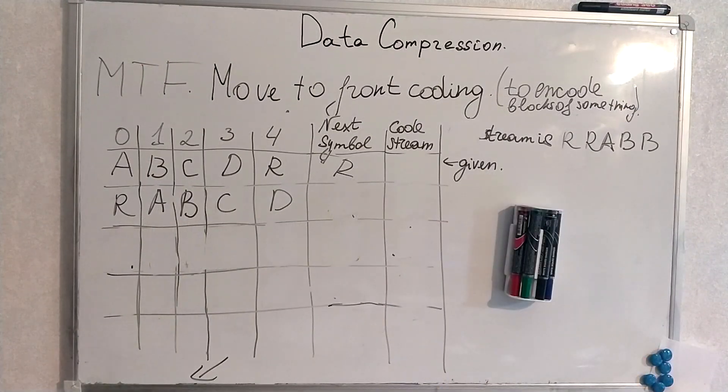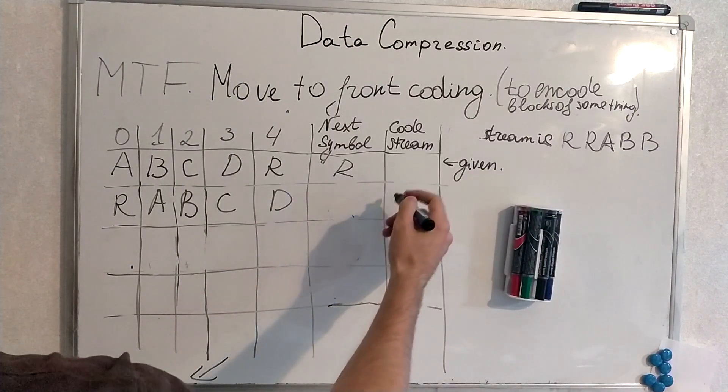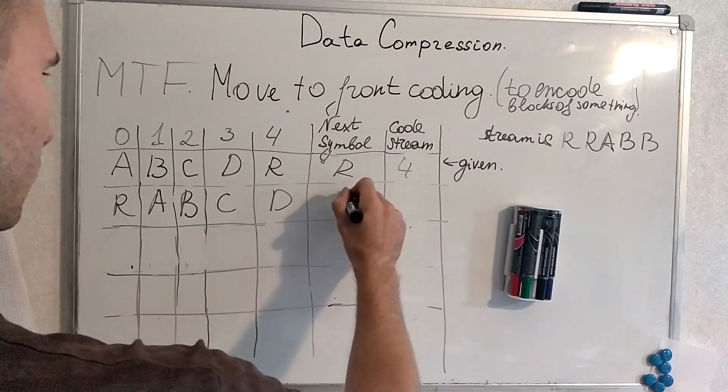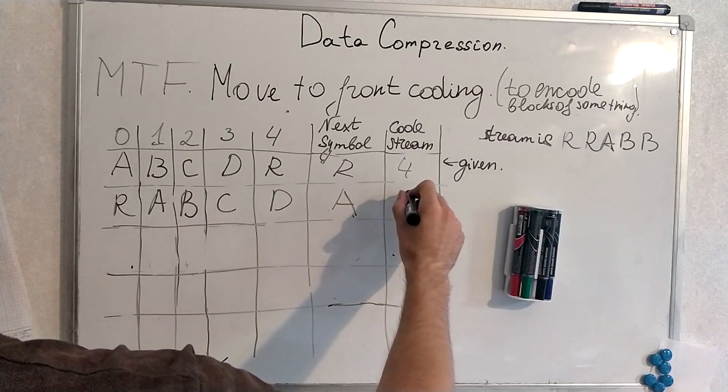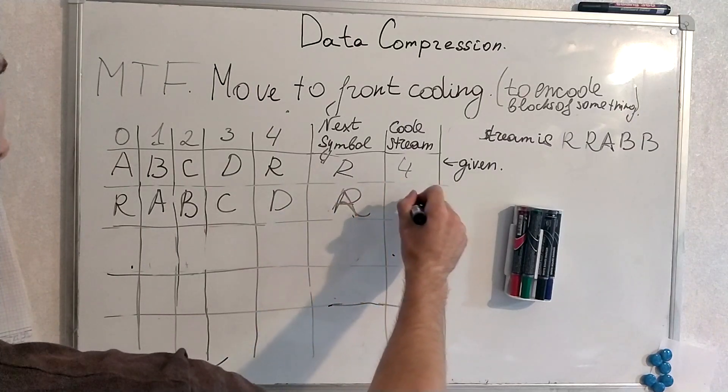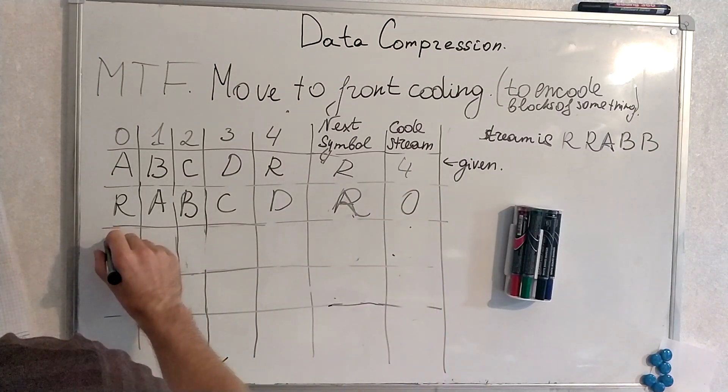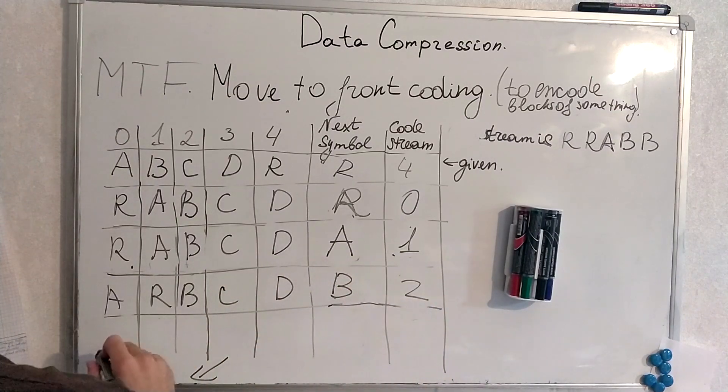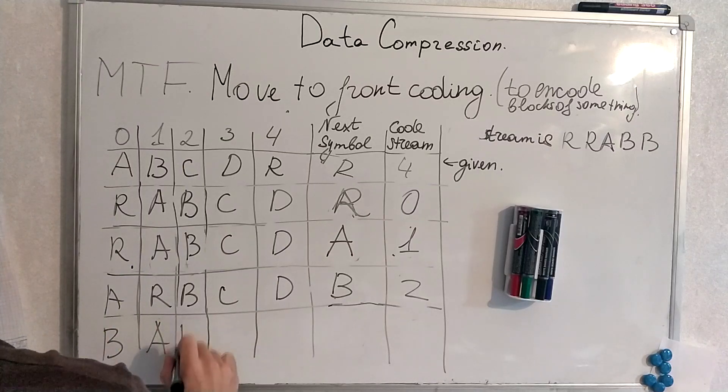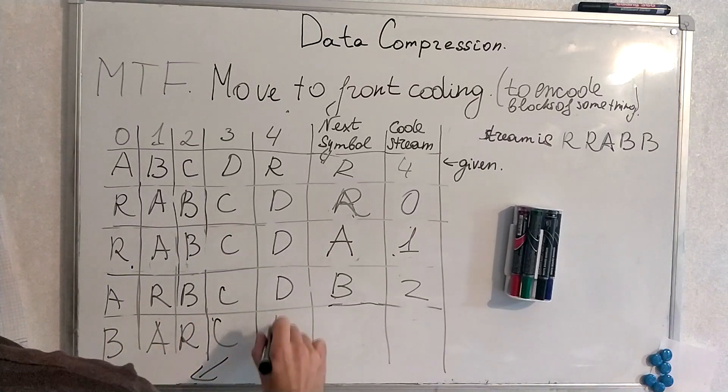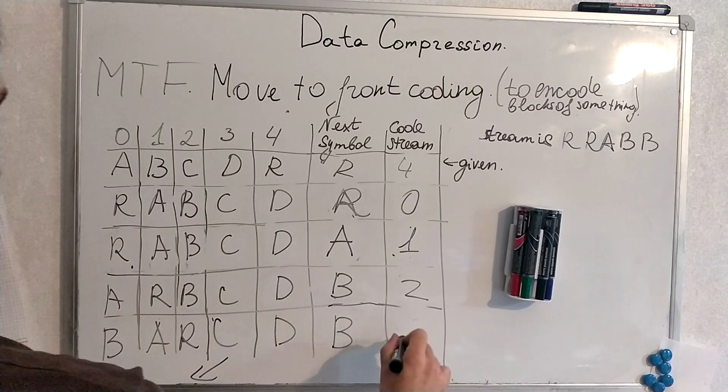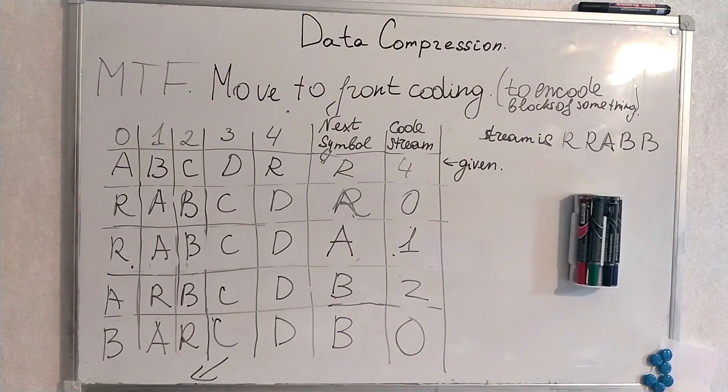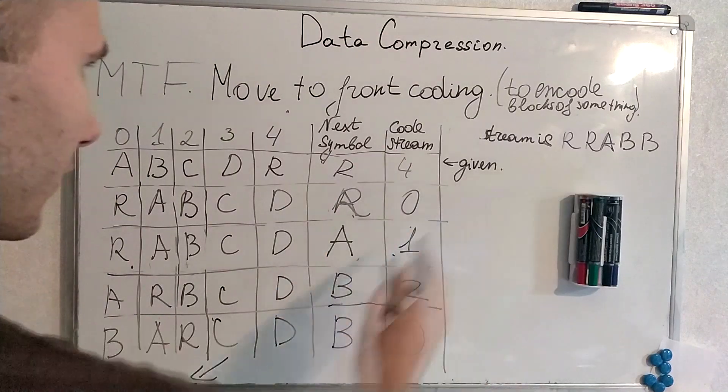And now encoding, next symbol is R, move it to the front. That's why we encode it with this code stream, this sequence.